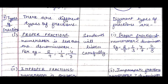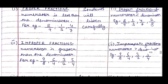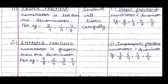Then comes improper fractions, where the numerator is greater than the denominator — just the opposite of proper fractions. For example: 9/8, 6/4, 3/2, 5/4. We will write the same thing on the board.